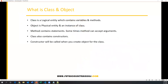A class is a logical entity which contains variables and methods, whereas an object is a physical entity and it is an instance of a class. We can create any number of objects for one class. A method is just like a function which contains certain statements that perform some logic. If you create a function outside of the class we call it a function, and if you create the same function inside the class we call it a method. Methods can also accept arguments just like functions. The class also contains constructors — a constructor is also like a method, but we'll discuss that later.